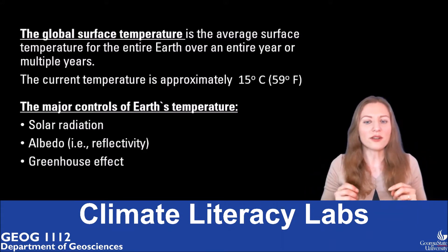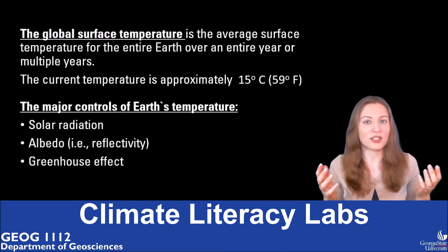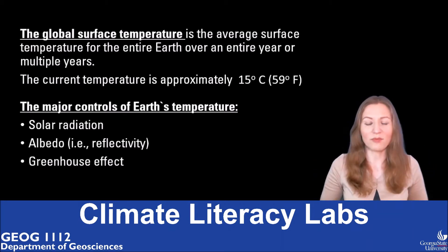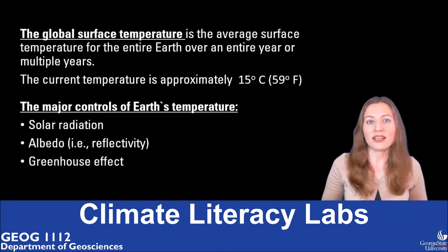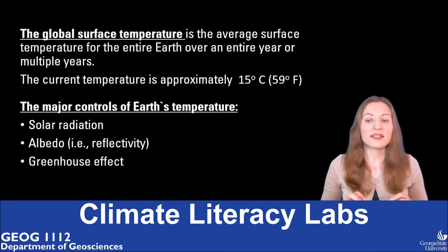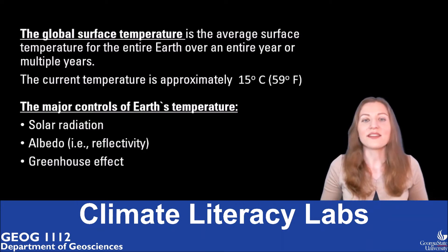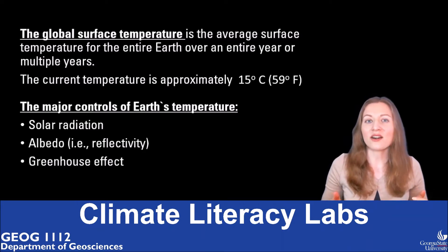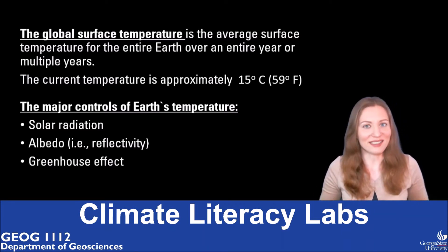You already learned about the role of solar radiation in lab 1 and explored the impact of greenhouse gases in lab 5. And now let's watch a NASA video called 'This World in Black and White' that explains Earth's albedo and feedback mechanisms.